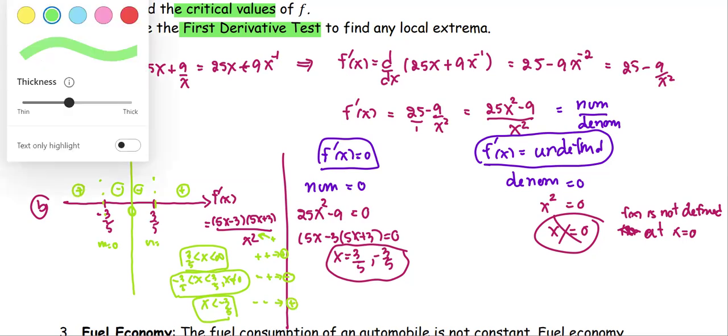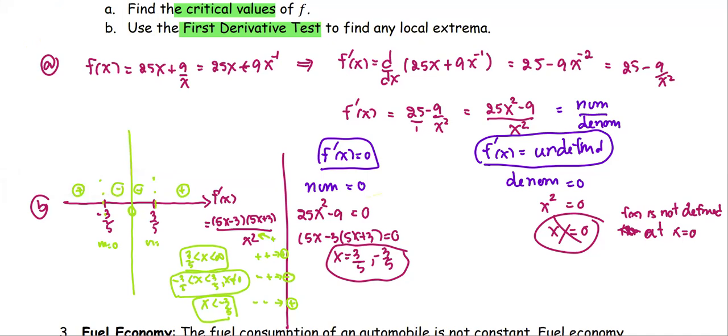And we're going to determine the increasing, decreasing behavior: increasing, decreasing, decreasing, increasing. So we have the local max at x equals negative 3 over 5, and the local min at x equals 3 over 5.